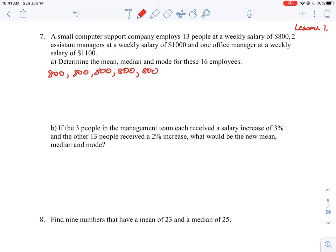okay, so that we list all the elements in our set here. So I've got two, four, six, seven, eight, nine, 10, 11, 12, and 13. And then we have two assistant managers at $1,000, and one office manager at $1,100.